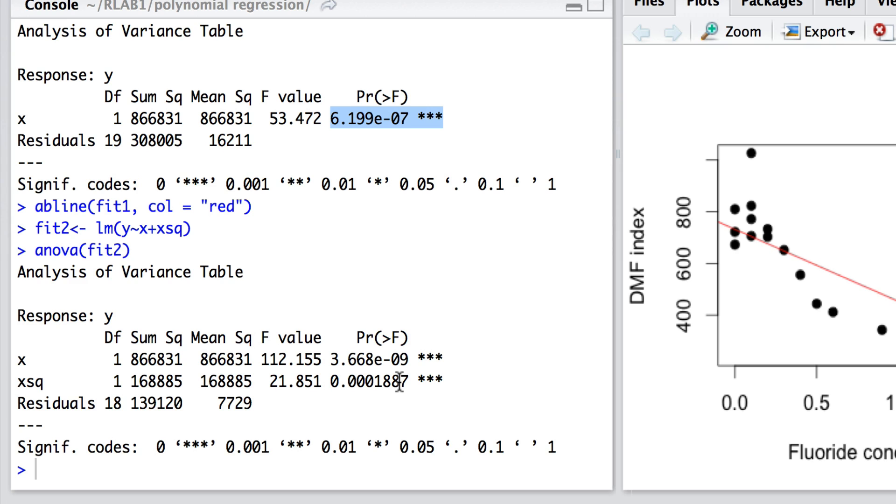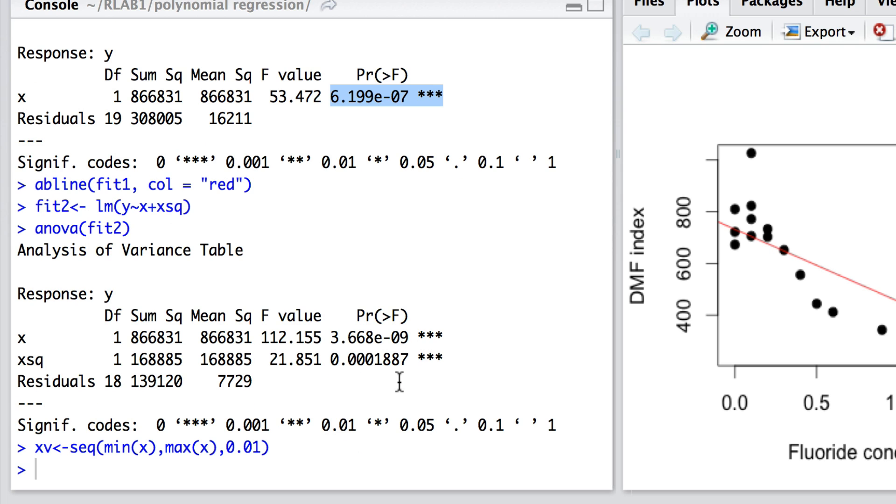So let's now fit this model to the graph and see how that actually looks. To do so, what we need is to define a variable xv, which is x values. And I'm going to go from the minimum value of x that was observed to the maximum and take it in small steps of 0.01.